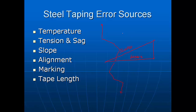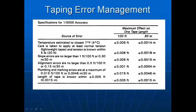Tape length is not as much of an issue as it used to be, but it is possible to break a tape. In years past when a tape was repaired by splicing, the spliced length could be slightly different from the original. These days, because of the price of tapes, if we break one we're more likely to replace it than splice it. So the error sources are: temperature, tension, slope, alignment, marking, and length.